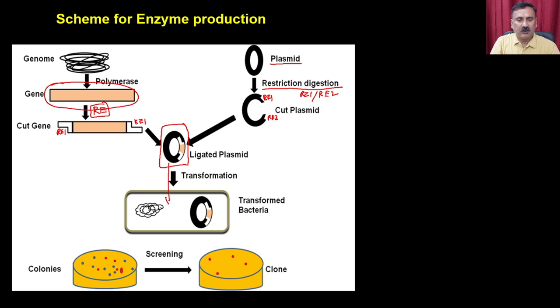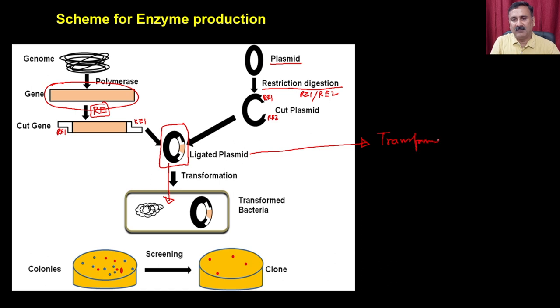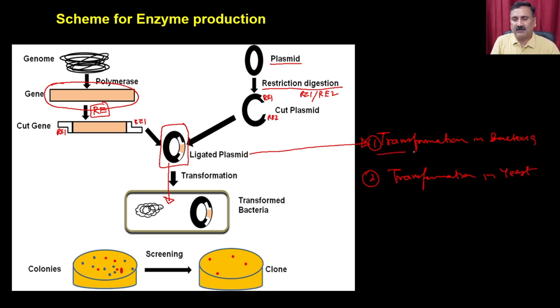This chimeric plasmid has to be delivered into the host. As discussed in the previous lecture, we covered DNA delivery methods utilizing transformation — transformation in bacteria or in yeast. In both methods, you treat the cells with a chemical agent that changes the surface chemistry and makes the cells competent enough to take up the exogenous DNA. Once the DNA is taken up, you put them into the recovery phase and get the transformed colonies.